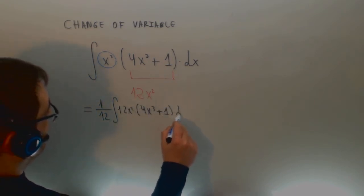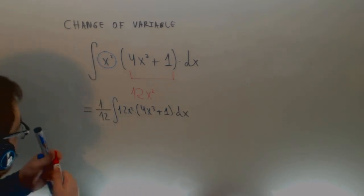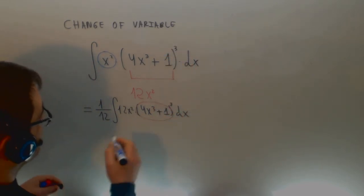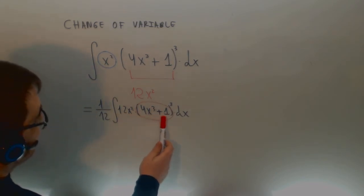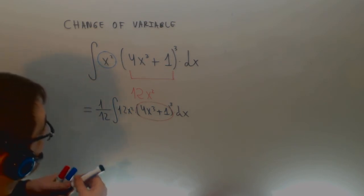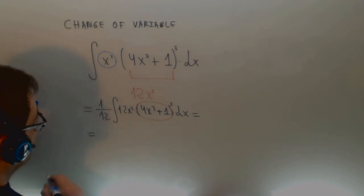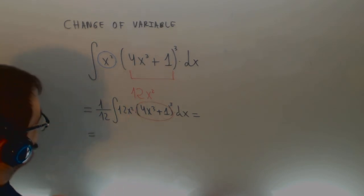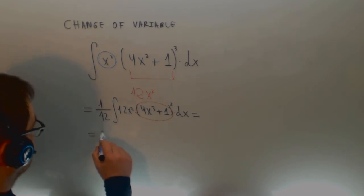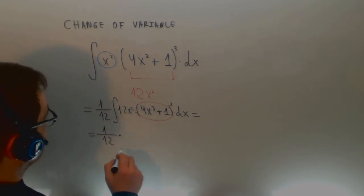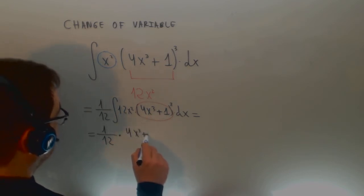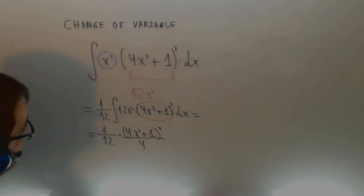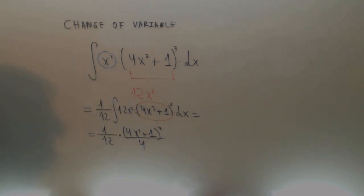Sorry, I have forgotten to put here a three. So you have the derivative of this expression — you have a function and its derivative — and applying the chain rule, I can put here one divided by 12, and the integral would be (4x³ + 1) raised to 4, divided by 4.